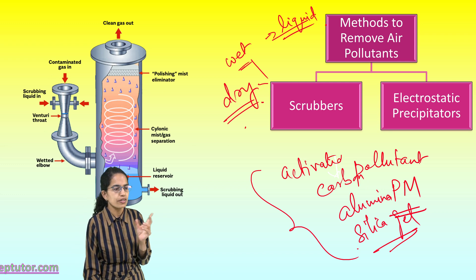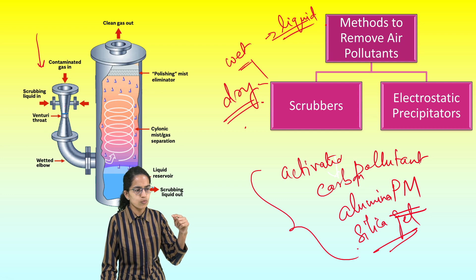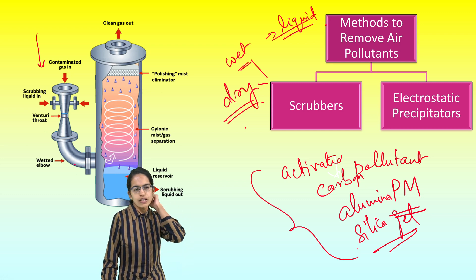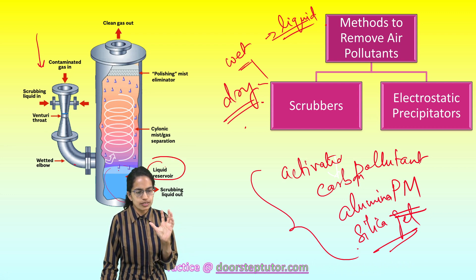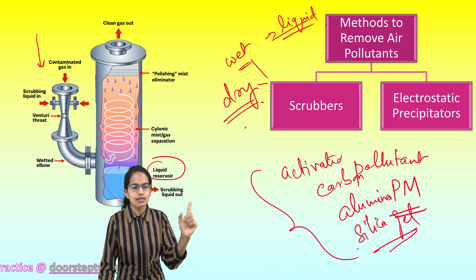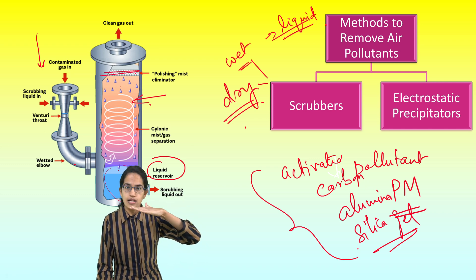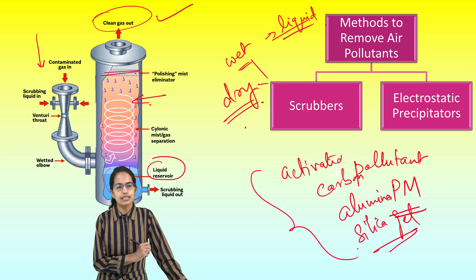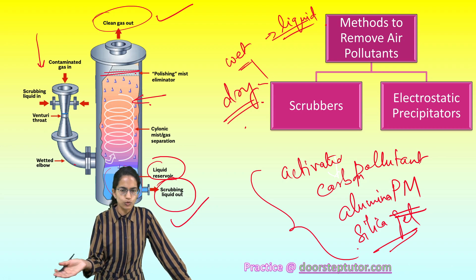Here is a diagram of a scrubber. Contaminated gas enters in, passes through a scrubbing liquid — this is an example of a wet scrubber. There is a liquid reservoir at the bottom, a gas separation unit in the center, and a layer at the top which eliminates mist. Finally, clean gas comes out from the top section, and the scrubbing liquid exits from the lower section.